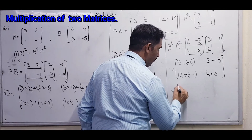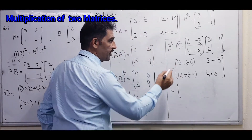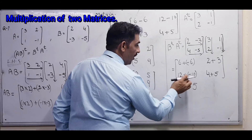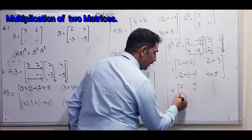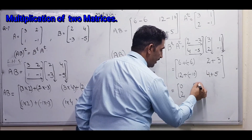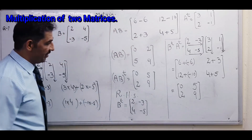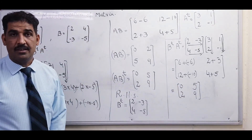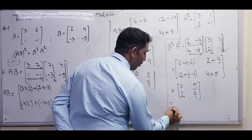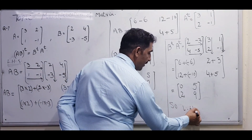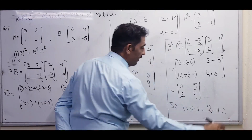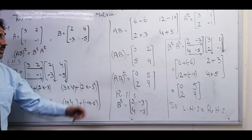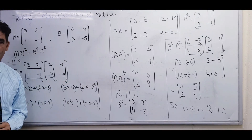Simplifying: 6 plus minus 6 equals 0, 2 plus 3 equals 5, 12 minus 10 equals 2, and 4 plus 5 equals 9. So B transpose times A transpose equals the matrix 0, 5, 2, 9 — the same as the left-hand side. Therefore left-hand side equals right-hand side, and the procedure of multiplying two matrices and finding the transpose is complete.